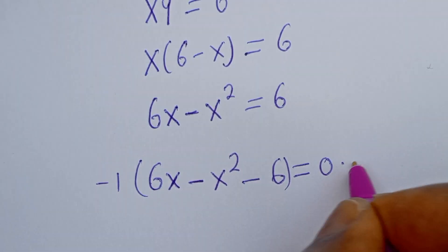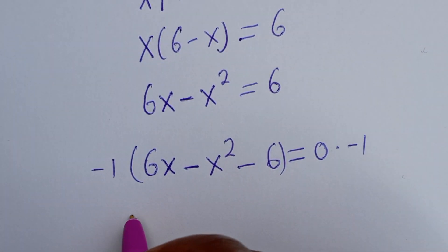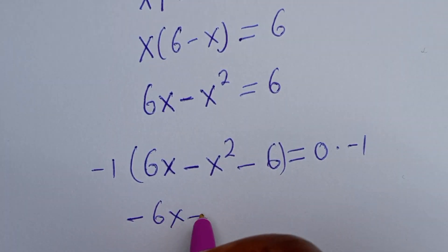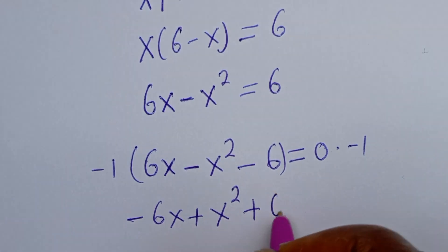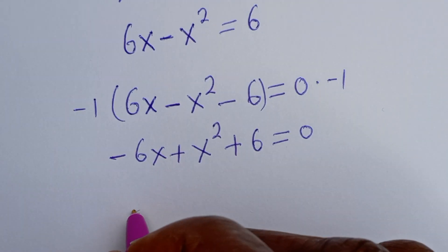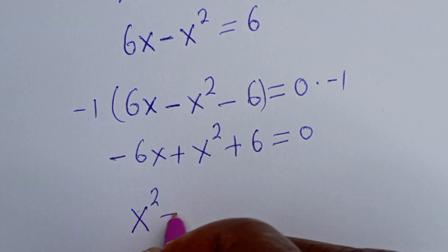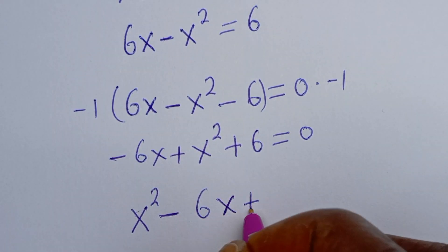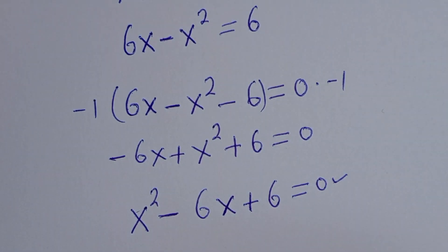Multiply both sides by minus 1: we get minus 6s plus s squared plus 6 equals 0. We can rearrange this to s squared minus 6s plus 6 equals 0. This is a quadratic equation.